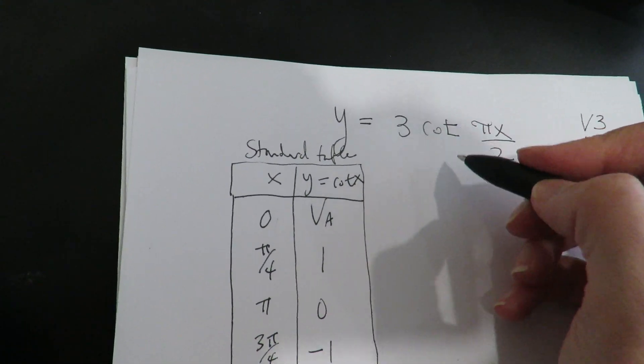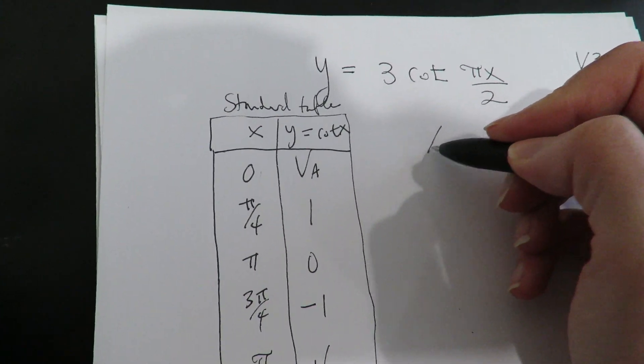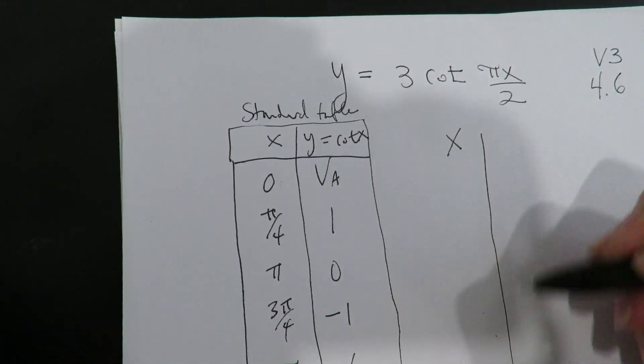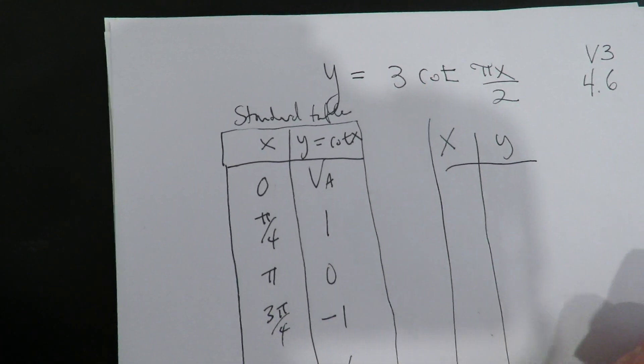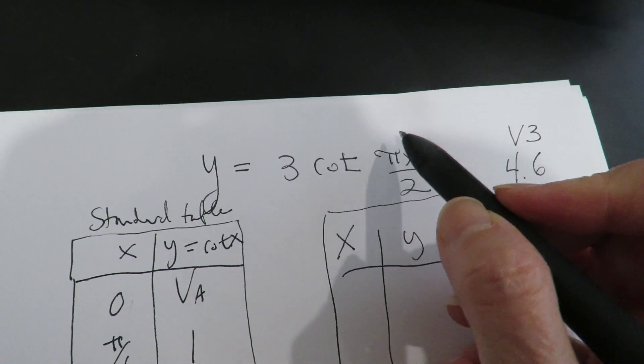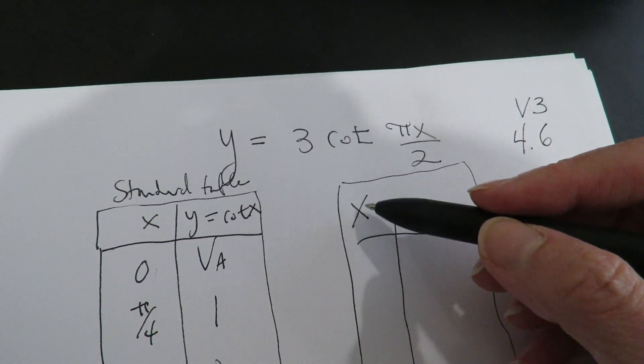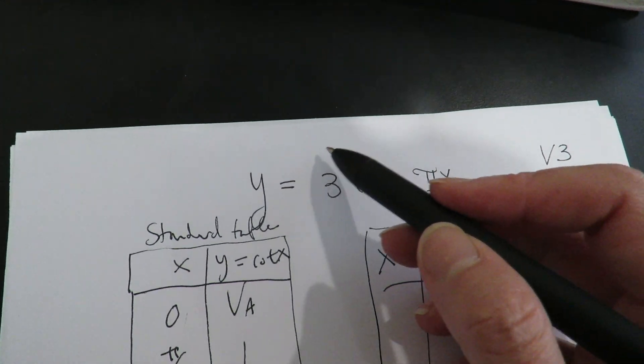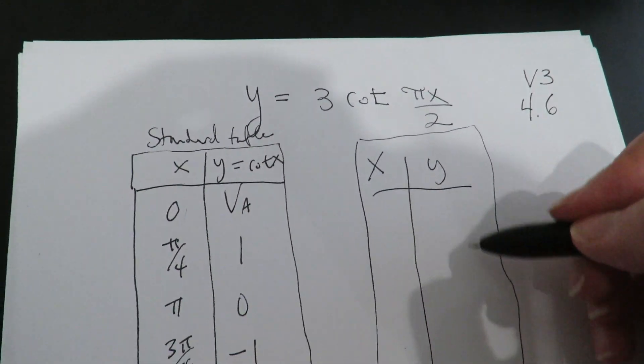Now, we're going to do the table for the new function I'm asking you to draw, this guy over here. So anything inside the trig affects the X column and anything outside the trig affects the Y column.